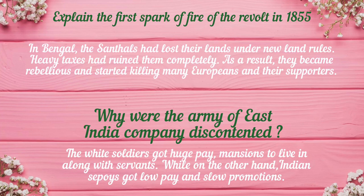Why was the army of the East India Company discontented? The white soldiers got huge pay, mansions to live in, and servants, while Indian sepoys got low pay and slow promotions. Due to these reasons they were discontented and angry, and thus they started revolting against the British.